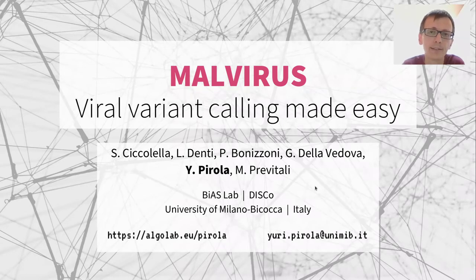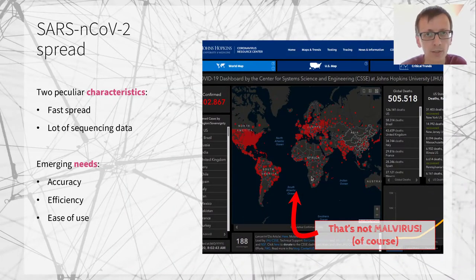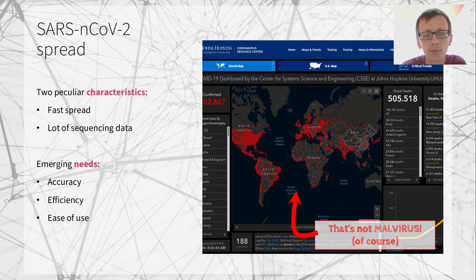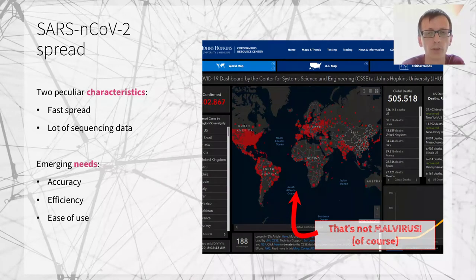For the novel coronavirus we have had public sequencing data since the very early days of the spread, and that makes it possible to study and track the spread of a virus by detecting and computing the genetic variations of viral strains.